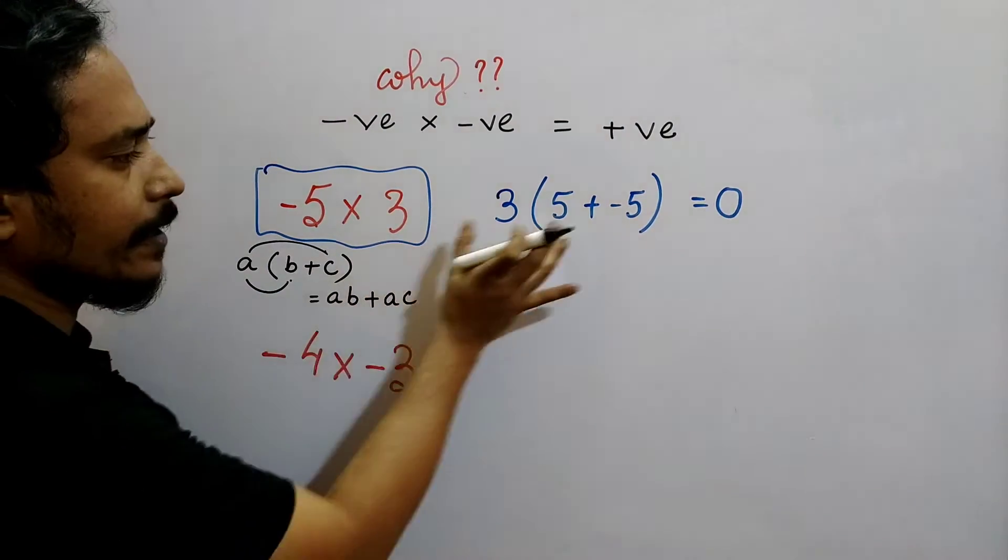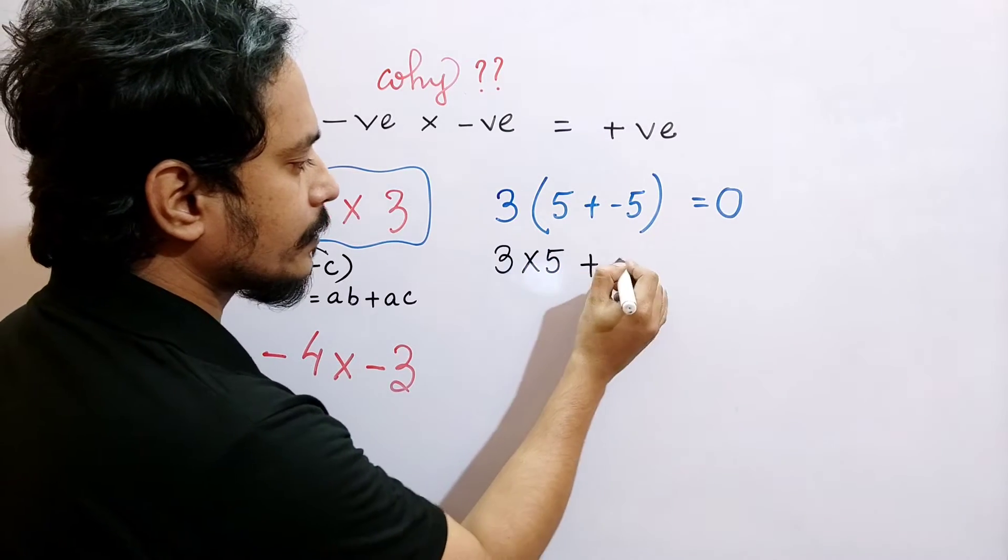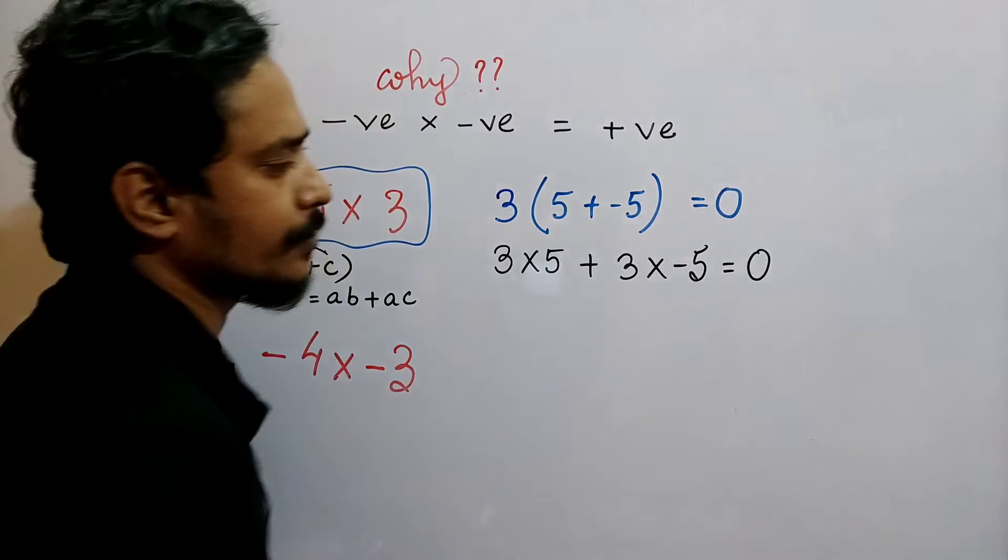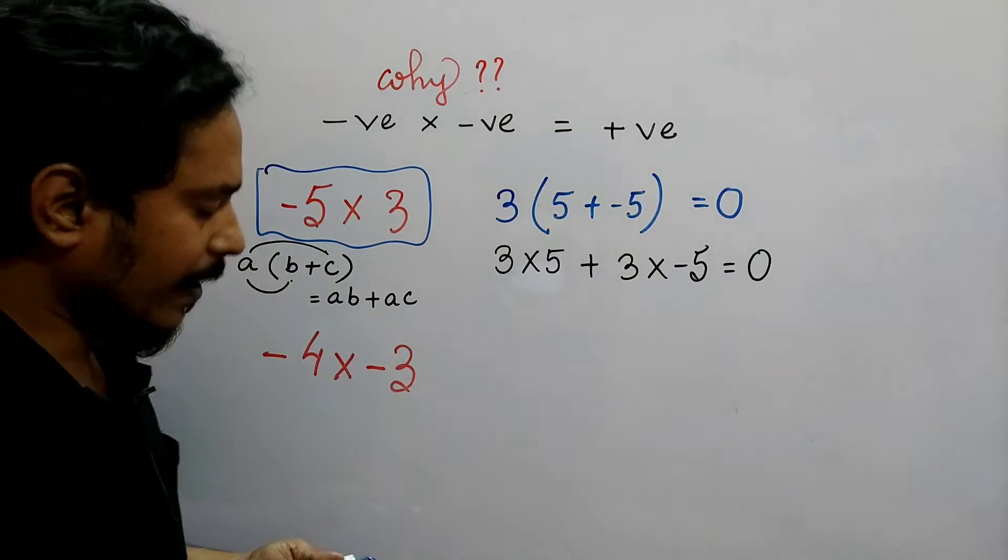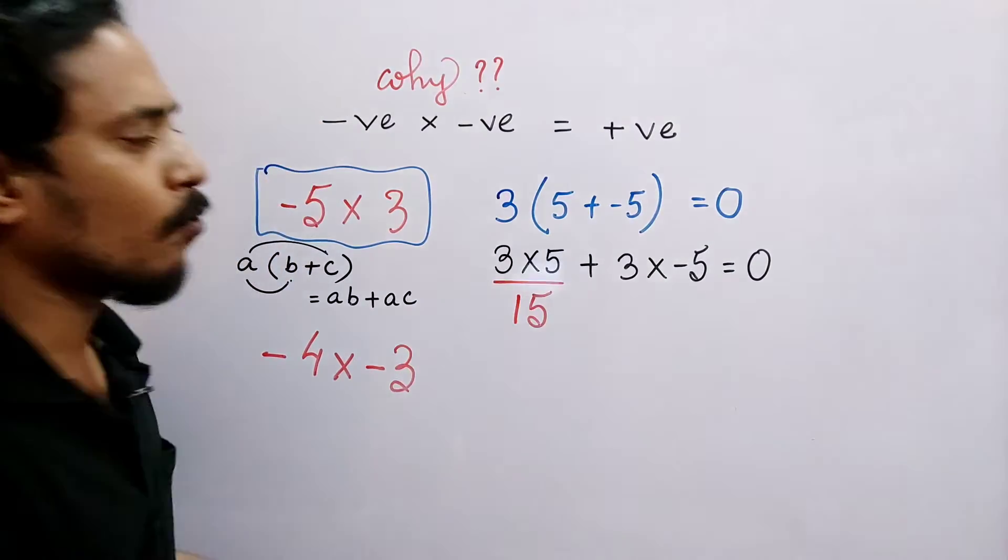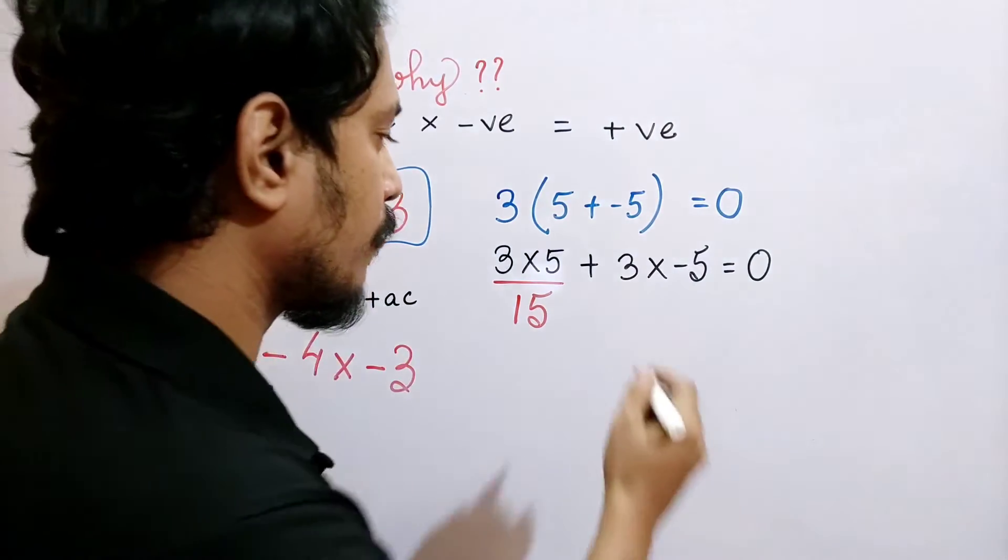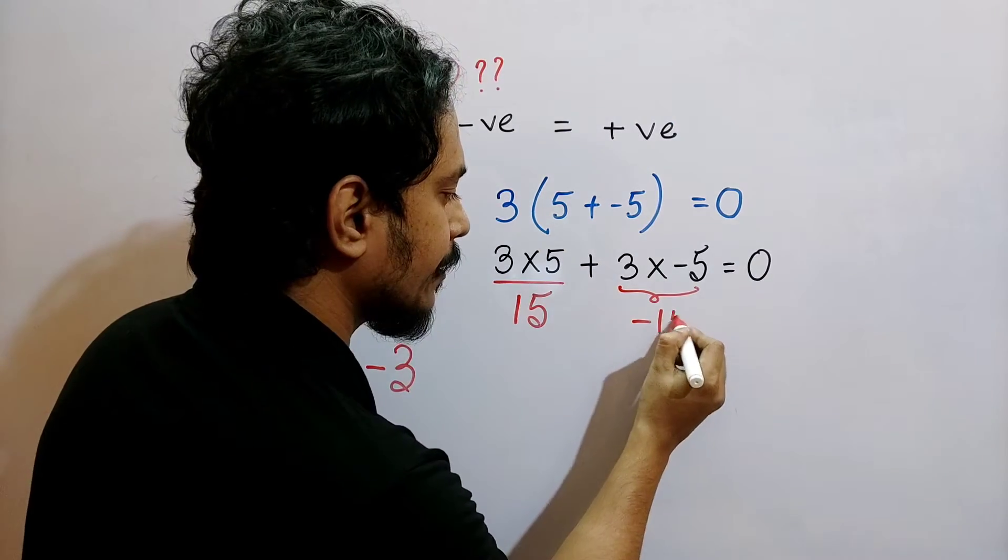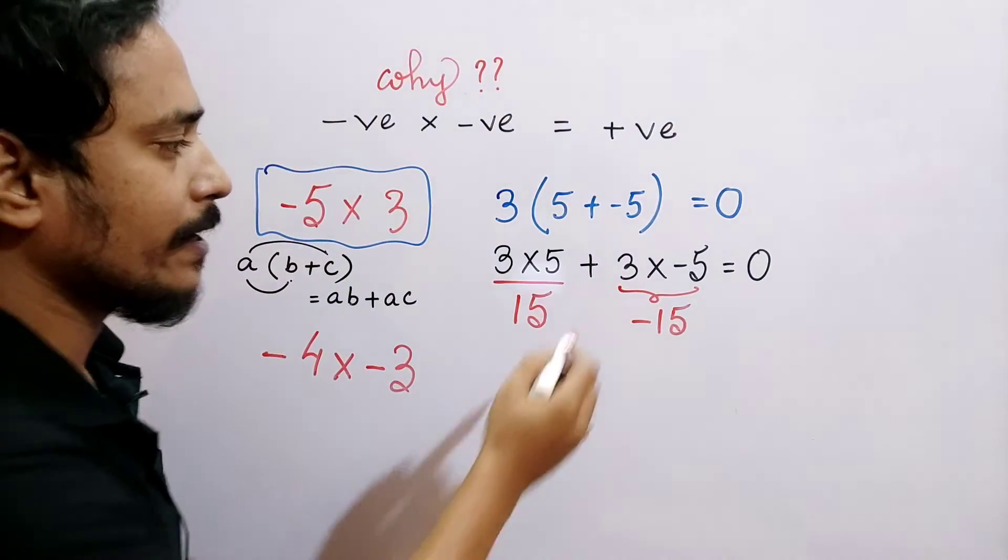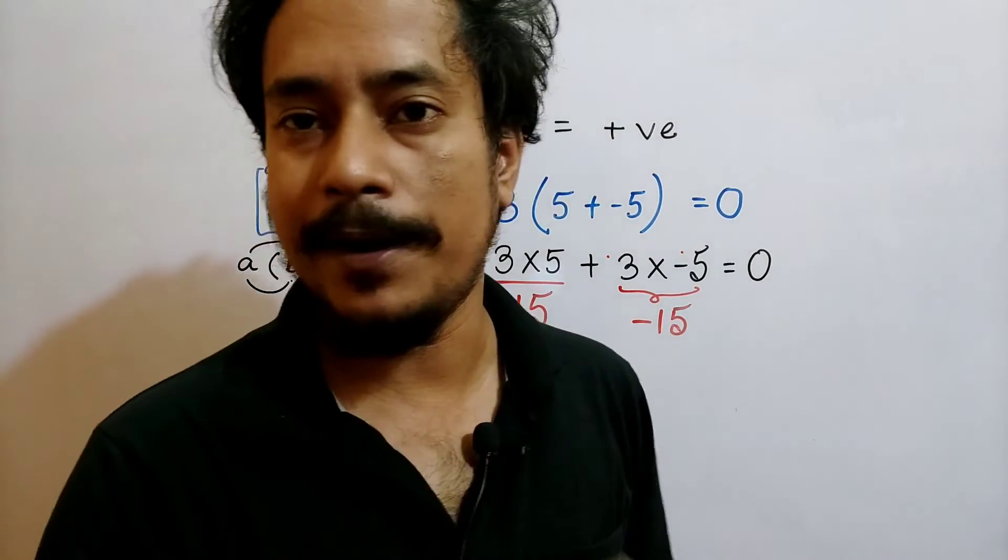One property is used: 3 into 5 plus 3 into minus 5, which is equal to 0. So the result is minus 15. That's why when a positive number is multiplied with a negative number, it becomes negative. Now,